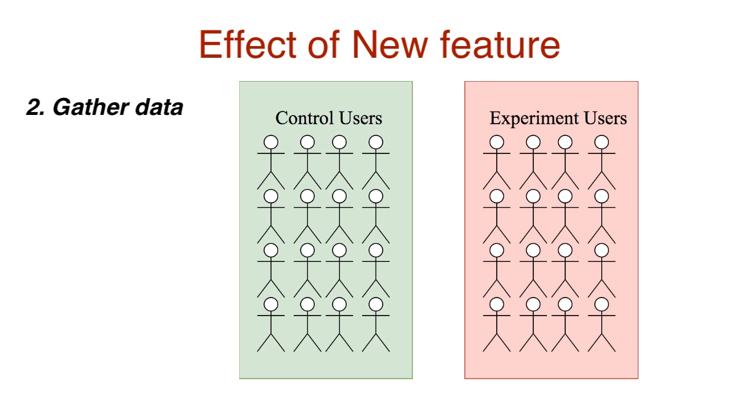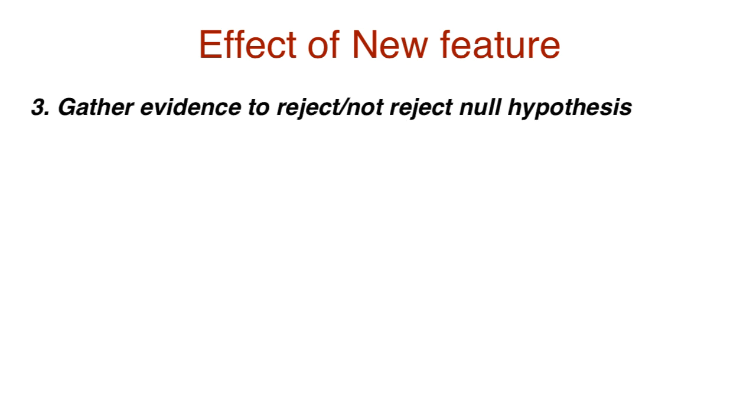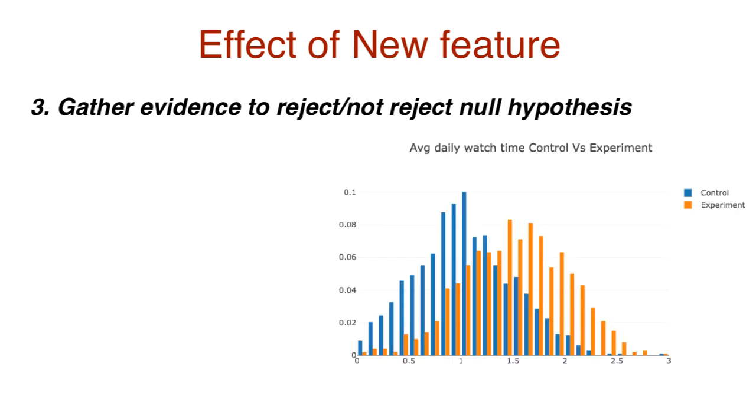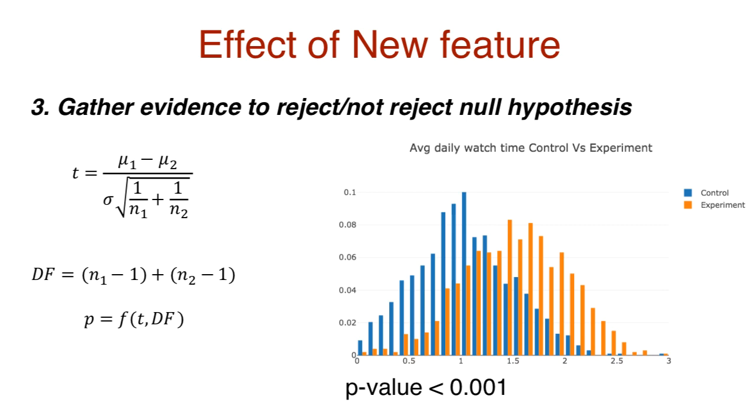Now that we gather data, we need to extract evidence to either reject or not reject our initial assumption. And we do this by determining the test statistic and a p-value. This type of test of comparing means between groups follows the t-test. So the test statistic is t. And we use this along with the degrees of freedom to determine the p-value.